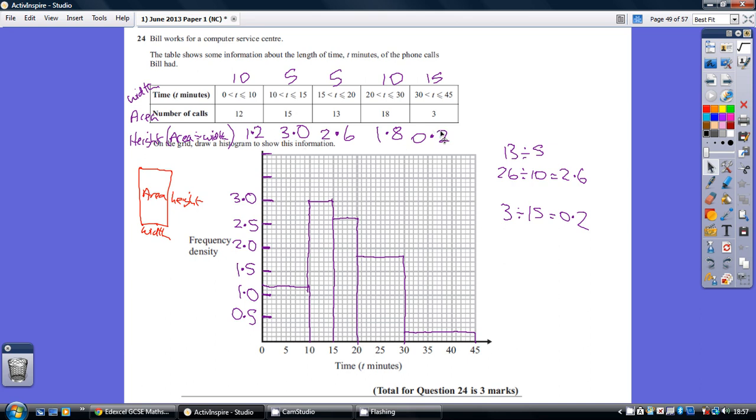So basically, these are the heights that we're going to have to plot. These are our frequency densities. This is the heights of the rectangle. So pick a sensible scale. We can see our biggest value is going to be 3. So I've done my scale like this.